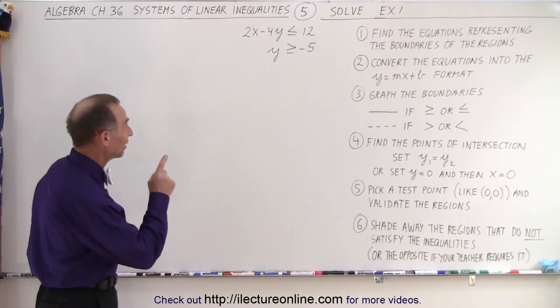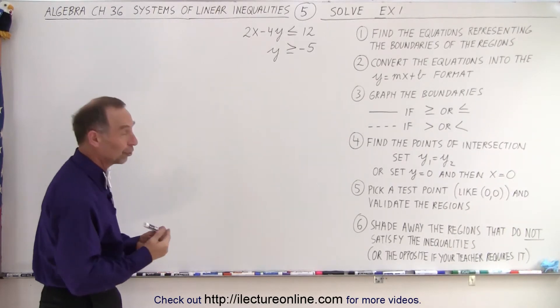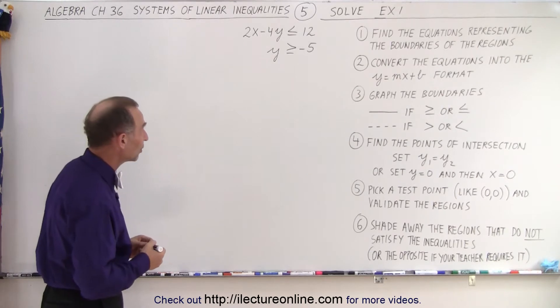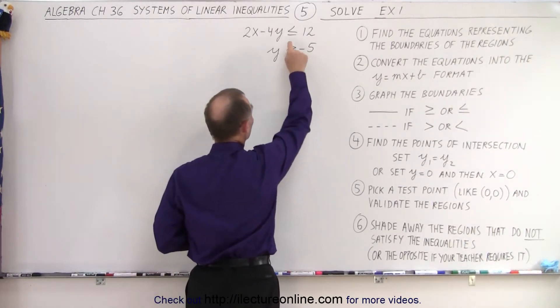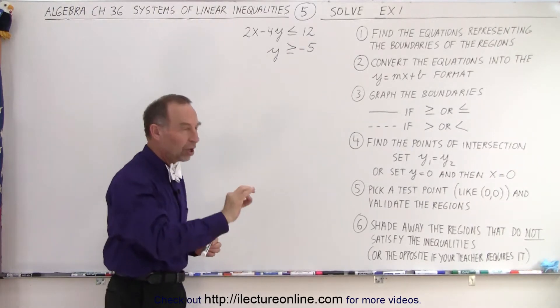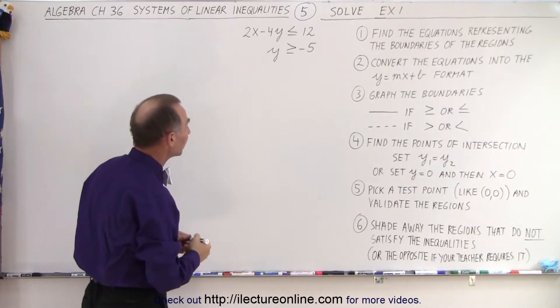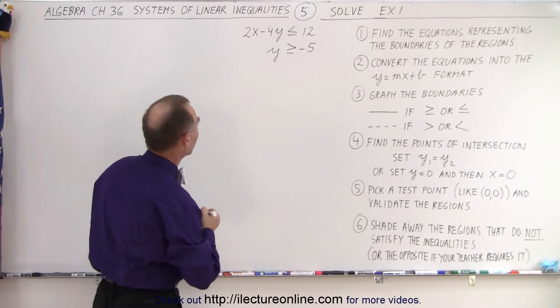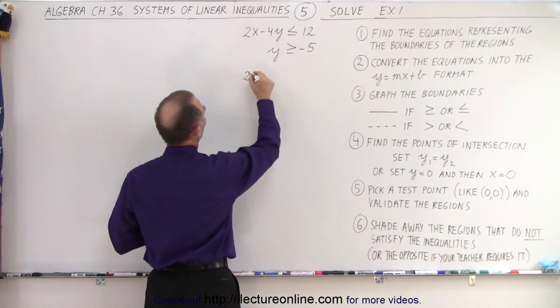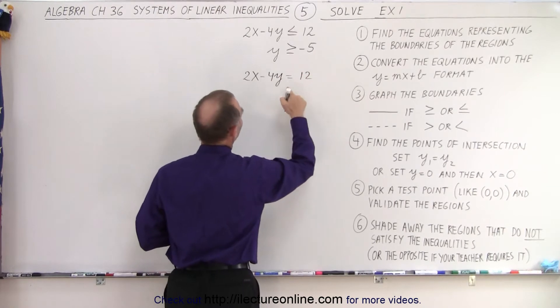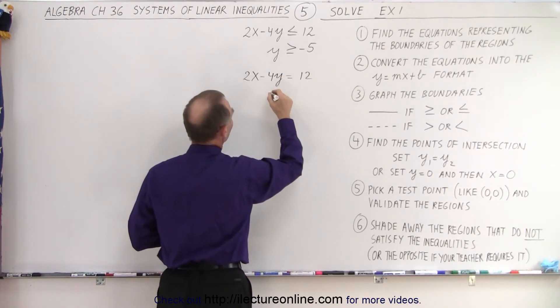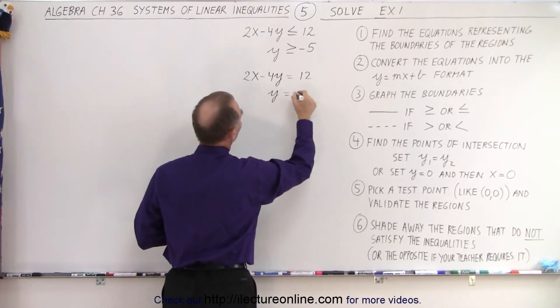The first step is to take the two inequalities and turn them into equations, which represents the boundaries of the regions that we're looking for. Notice there's an equal sign in each one of those, so the boundaries will be solid, because the solution will indeed include the boundaries. So this becomes 2x minus 4y equals 12, and now we'll take the next one, we get y equals minus 5.